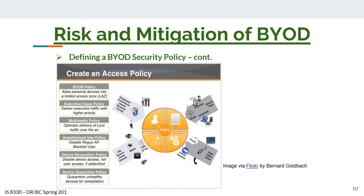Policy categories based on BYOD policy include: placing all personal devices into a limited-access zone; an executive class policy that delivers executive traffic with high priority; a multimedia policy that optimizes delivery of link traffic over the air; an unauthorized use policy that disables rogue IPs and blacklists the user; a device notification policy that disables device access and notifies users if the device is stolen or missing; and a device quarantine policy that quarantines and holds an unhealthy device for remediation purposes.